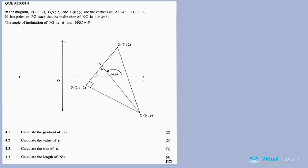For question 4, in the diagram below I have F, G, and C as the vertices of triangle FGC. FG is perpendicular to FC at a 90 degree angle.